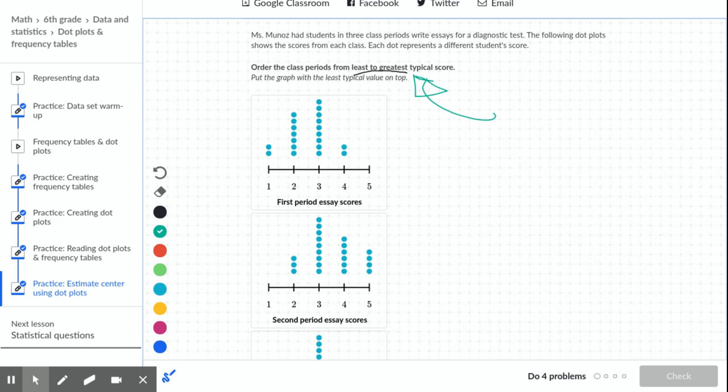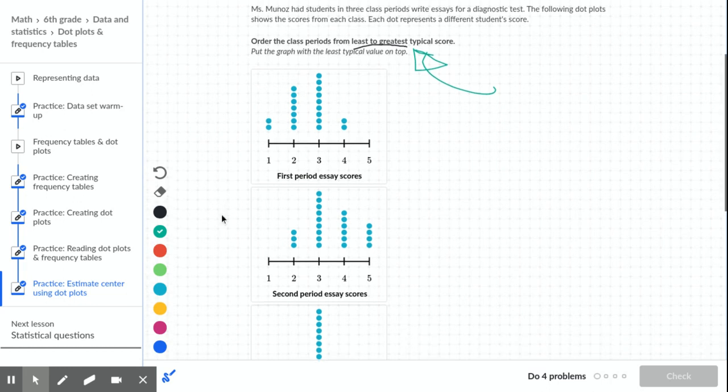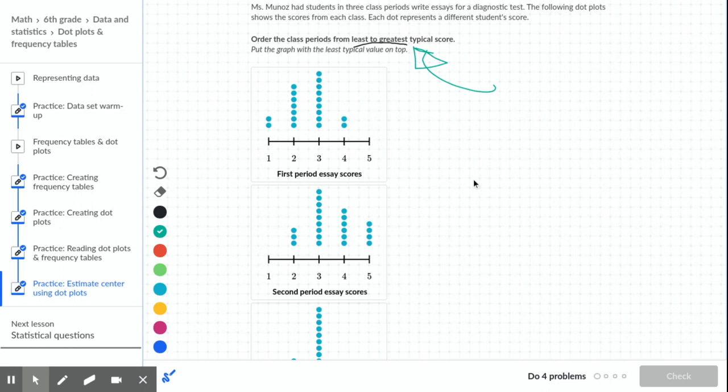So let's look at the first graph first. If I looked at this graph right here, this first one, and I looked for the middle, I would be able to say that the middle probably wasn't four or five, and it probably wasn't one. But it might be kind of hard to tell if it was between two or three.